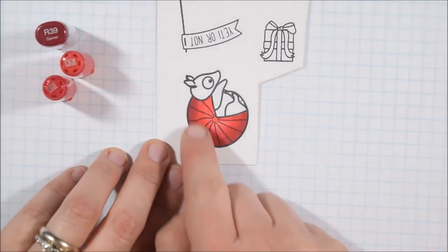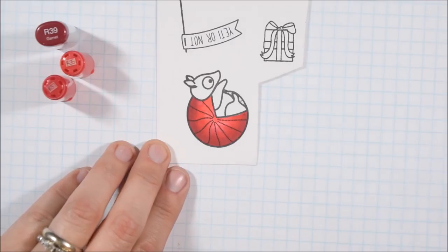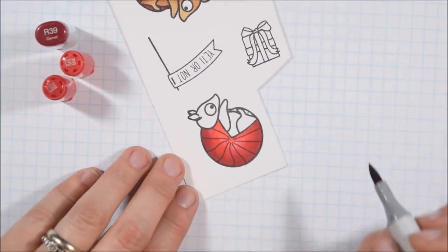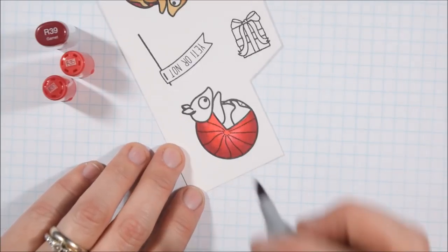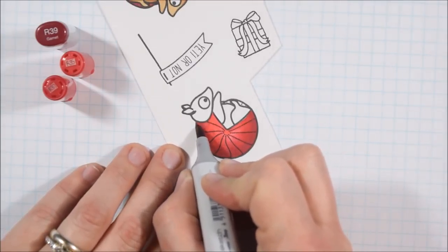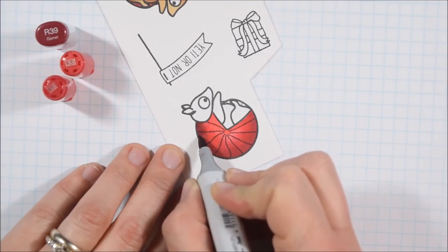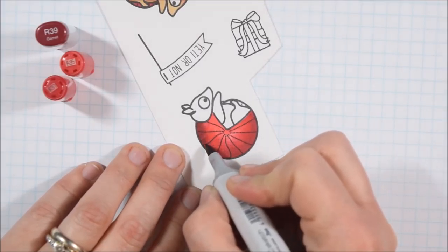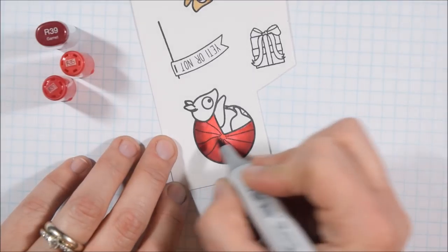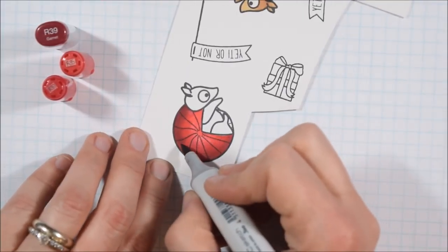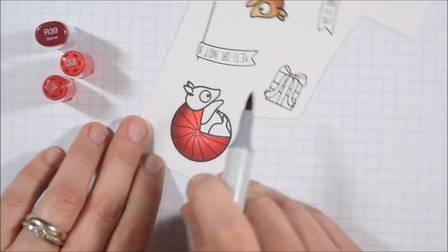Now I'm noticing some areas with the R39 are a little darker than I'd ideally like and I want just a bit more contrast, so I'm going back in with my R39. I'm using 110 pound Recollections cardstock from Michaels and I have found that it holds up to a pretty fair amount of ink, so I like it. I'm used to it.